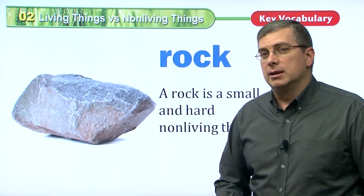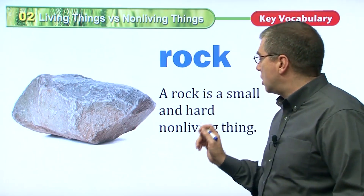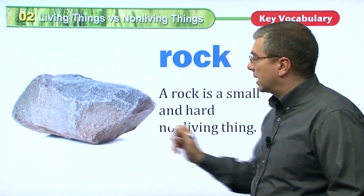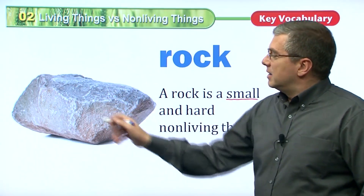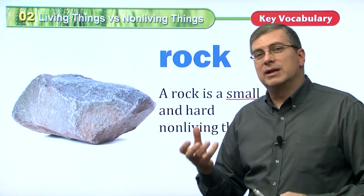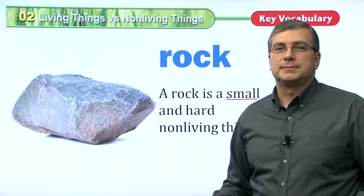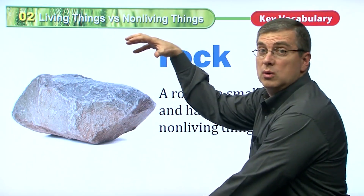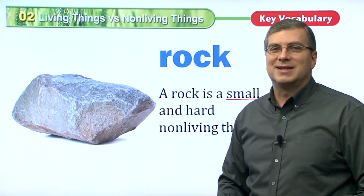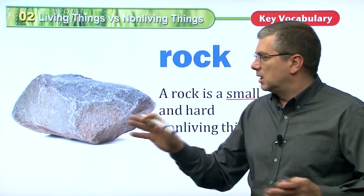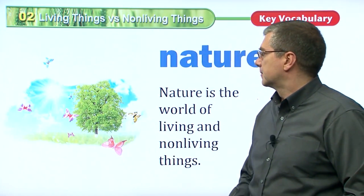A rock is an example of a non-living thing. A rock is small and hard. This little rock you can pick up off the ground — it's small, it's hard, it's very tough, and it does not live. This rock doesn't need water or food. It's not going to grow. It will stay the same unless something like water changes it, but by itself it will not grow or change.